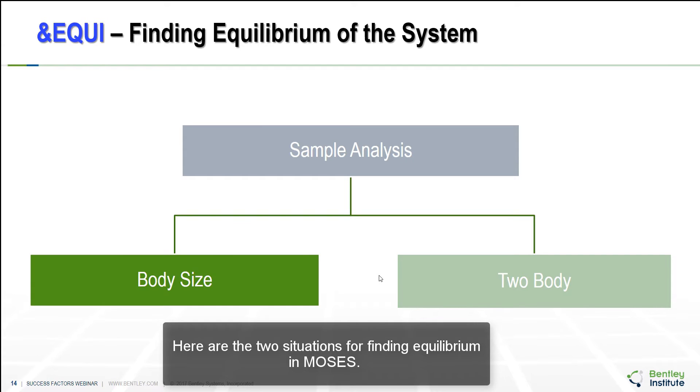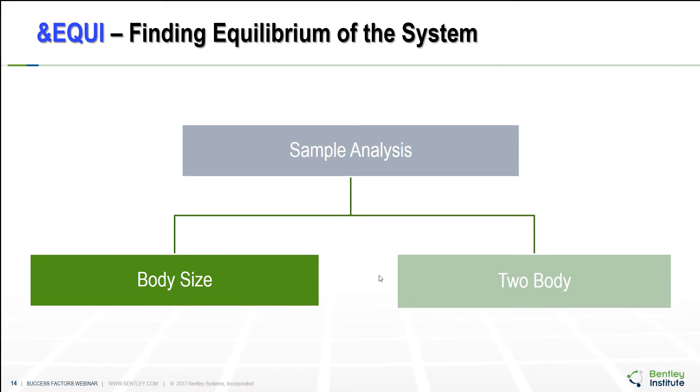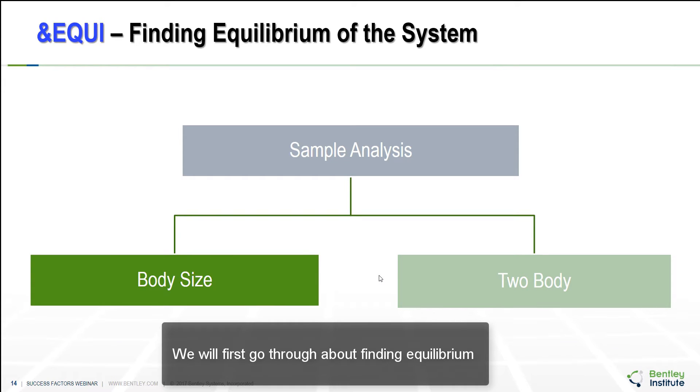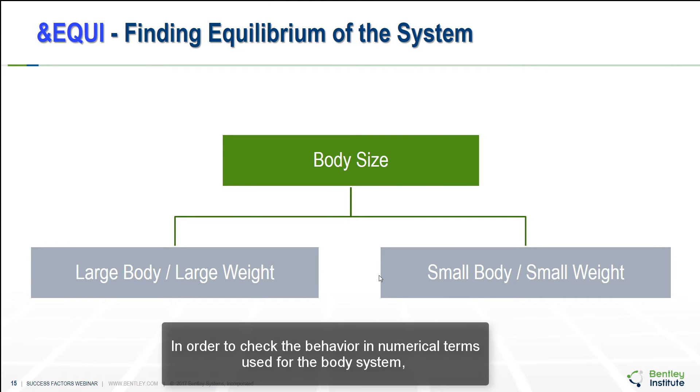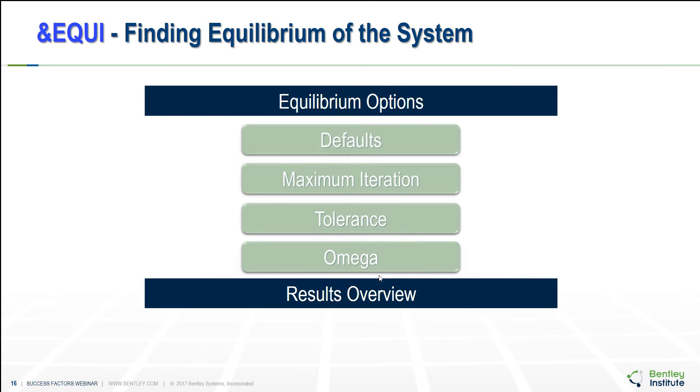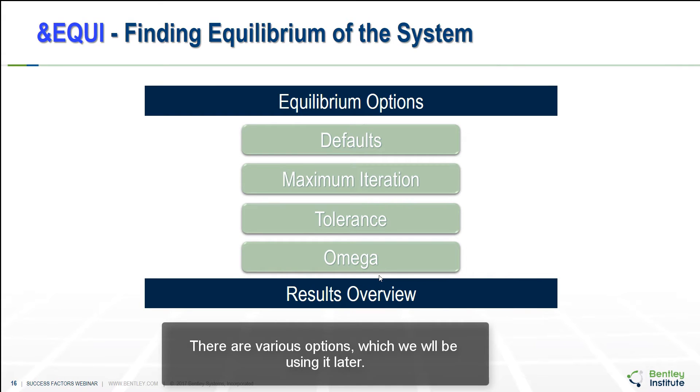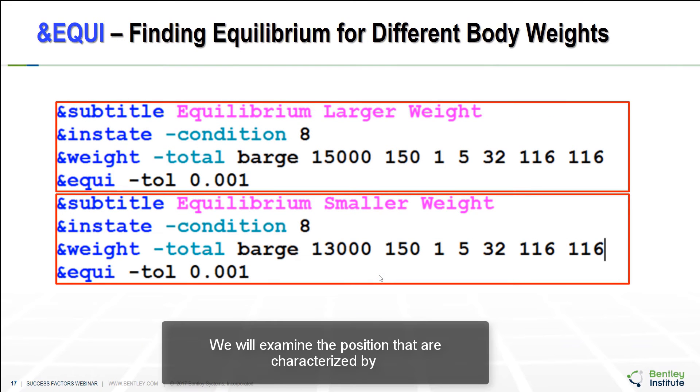Here is the two situations for finding equilibrium in MOSES. We will first go through about finding equilibrium of the system by looking at body size of the system. In order to check the behavior in numerical terms used for the system body, a procedure was applied to two simple cases that are representative of two quite different marine structures. We have large structure or large body and we have small structure or small body. There are various options that we will be using later. We will examine the position that are characterized by the center of gravity and the weights. And here we go with the default option of the &EQUI command.